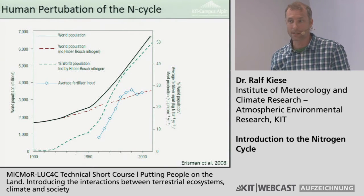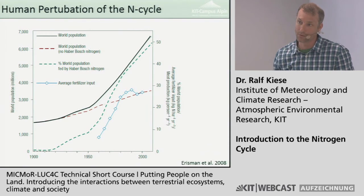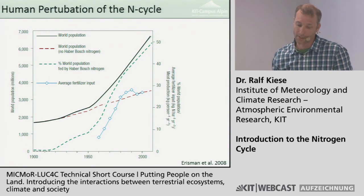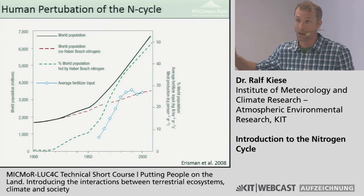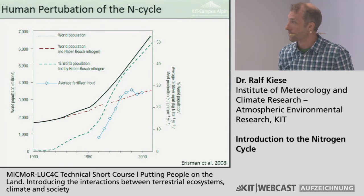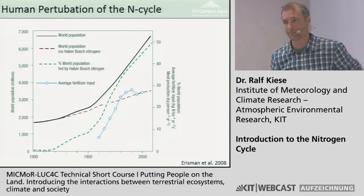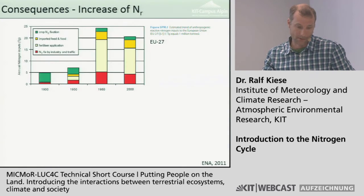People realize nitrogen is a threat to the environment and there is some reduction in fertilizer input and more efficient agriculture. However, many countries — for example in Africa — have almost no fertilizer application at the moment. From that point of view there is really this two-fold divide in terms of nitrogen perturbation: in Africa there is still too little nitrogen for increasing crop production.